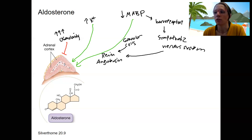So regardless of whether the stimulus is high potassium or low blood pressure, aldosterone is going to be released, and it's going to target the cells of the distal convoluted tubule, also the collecting duct.